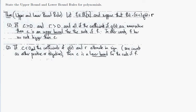If c is negative and the coefficients of q(x) and r alternate in sign, then c is a lower bound for the roots of f. To illustrate what this means, let's do an example.